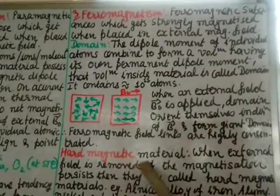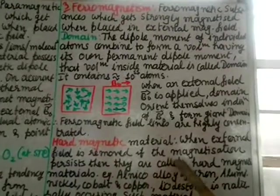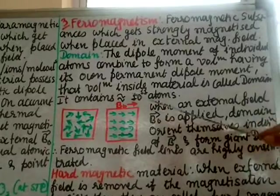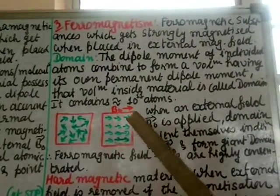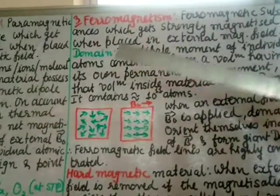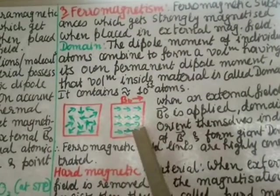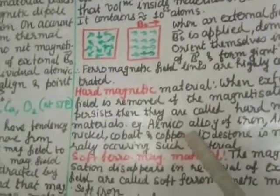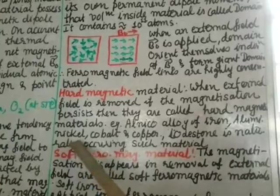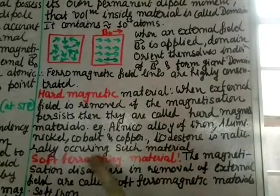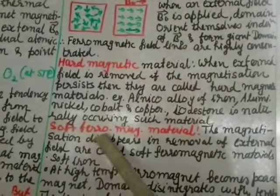Hard magnetic materials: when the external field is removed, if the magnetization persists, they are called hard magnetic materials. You apply the external magnetic field, the domains get oriented; now if you remove the external magnetic field but the domains remain oriented, you call them hard magnetic materials. Examples are alnico — an alloy of iron, aluminum, nickel, cobalt, and copper — and loadstone, which is a naturally occurring hard magnetic material.